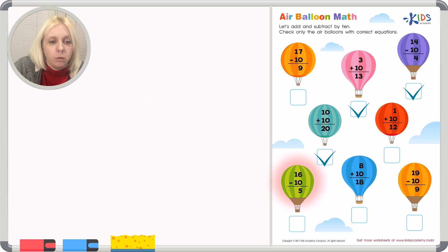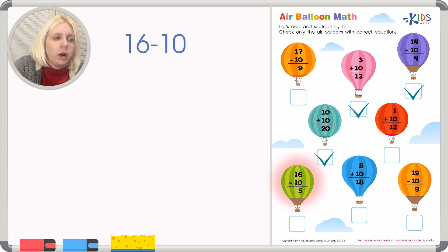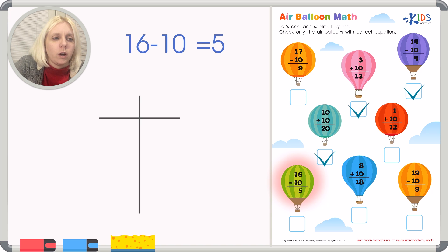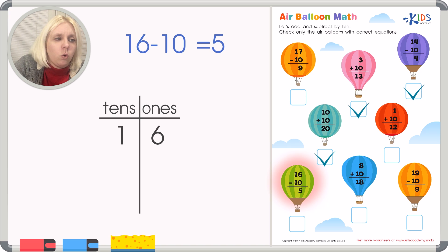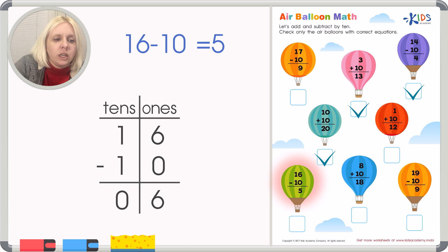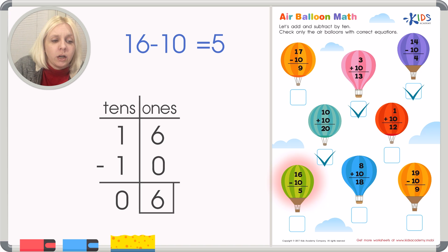Next is the green balloon: 16 minus 10 equals 5. Let's use the T-chart. For 16: one column of ten and six ones. For 10: one ten and zero ones. Subtracting: six minus zero is six; one minus one is zero. So the answer is six. That doesn't match the five they wrote, so this equation is not correct. No check mark here — the correct answer is six.